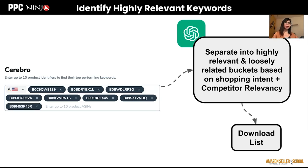What you provide ChatGPT with is a description of your product, so it knows which keywords are actually related to your product and which are not. This immensely improves the quality of your keyword research because you don't have to spend time going over every single keyword — there are a lot of garbage words that get shown. You're basically separating that list based on shopping intent and relevancy. That's how you evaluate the list and then ask ChatGPT to give you a downloadable file, which you can use for your keywords.